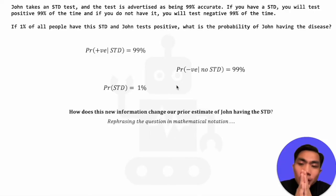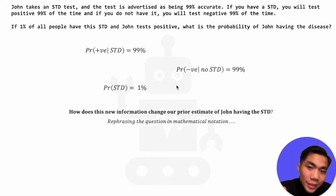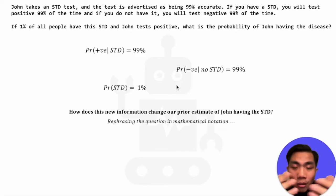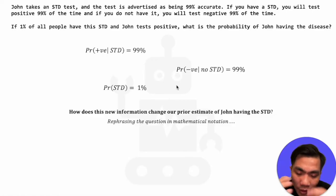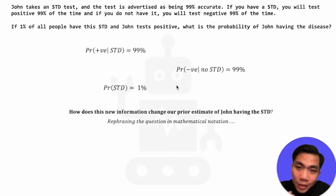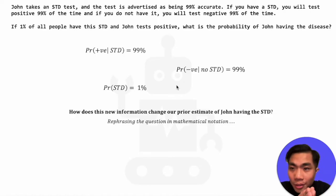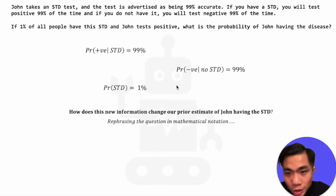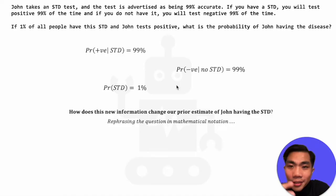Now, what is the question asking? Given this new information — given that we know John has tested positive, and given the probabilities of the outcomes for this test — how does this change our prior estimate of John having the STD? Because if we forget about the test and the fact that John has tested positive, and just ask what is the probability of John having the disease, that is simply the probability of anyone having the disease, which is 1%. So this is our prior knowledge.